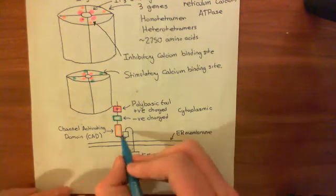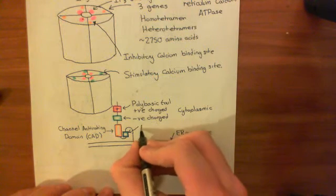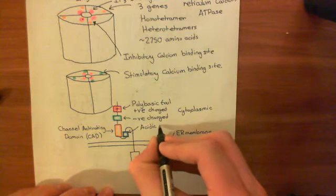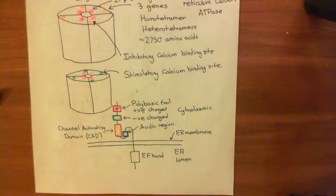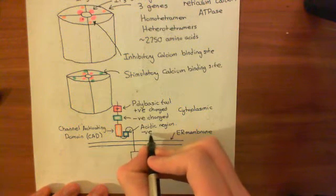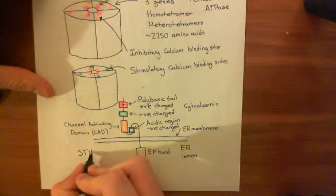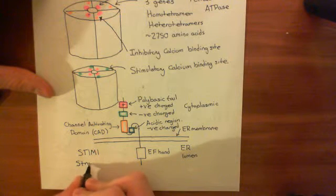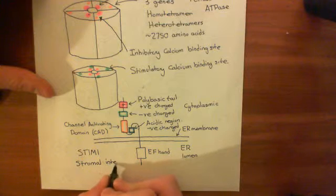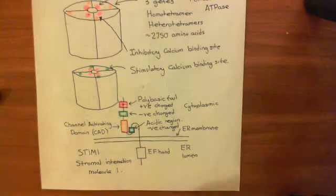The next portion down here is what's known as the acidic region. This blue region is an acidic region — the exact opposite of the polybasic tail. It basically contains a huge number of acidic residues. Acidic residues like to throw away their protons, and in so doing they themselves gain a negative charge, so this region is very negatively charged. This entire protein is known as the STIM1 protein, which stands for stromal interaction molecule 1. What we now need to see is what is going to happen when calcium goes down in the ER, and how STIM1 is going to help us.